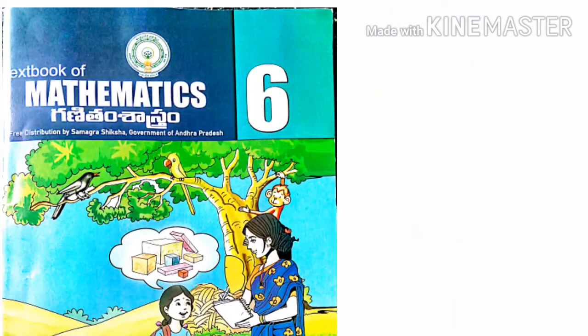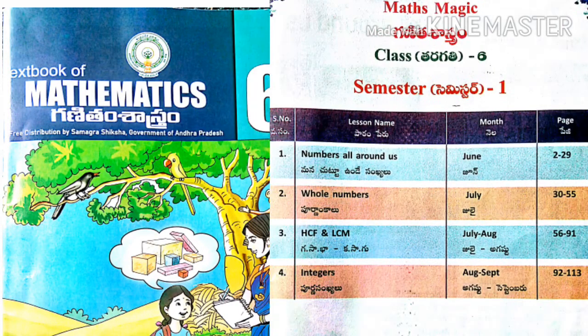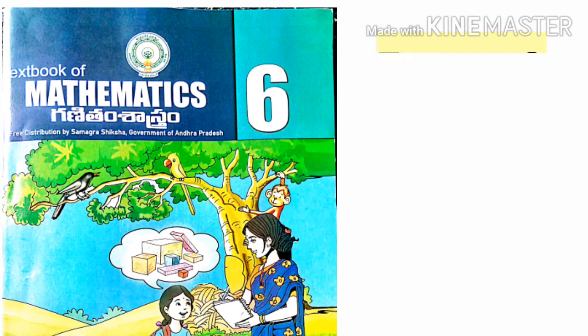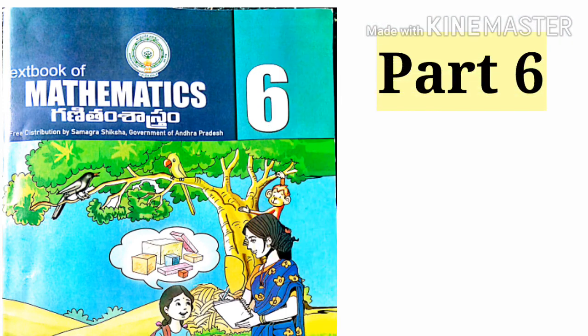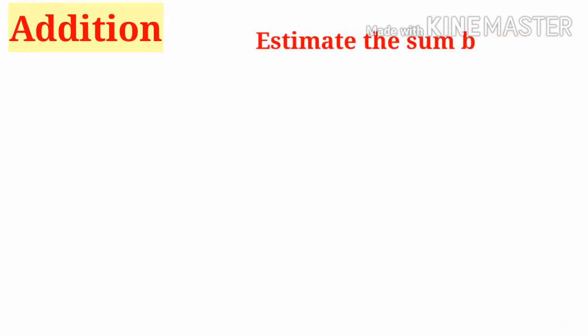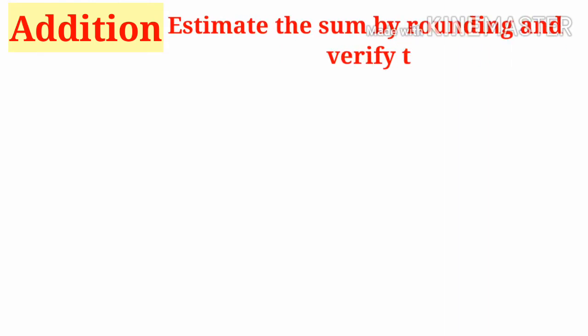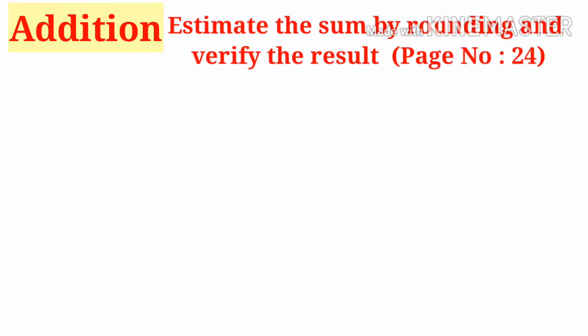Welcome to Shaker Mass. Today we are going to learn sixth class mathematics, semester one: Numbers All Around Us, part six — four fundamental operations. Number one: Addition. For this, let us take an example problem: estimate the sum by rounding and verify the result.